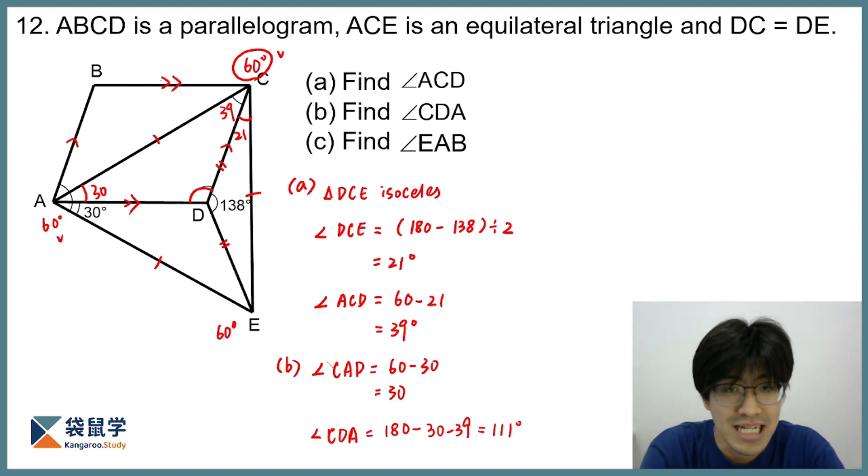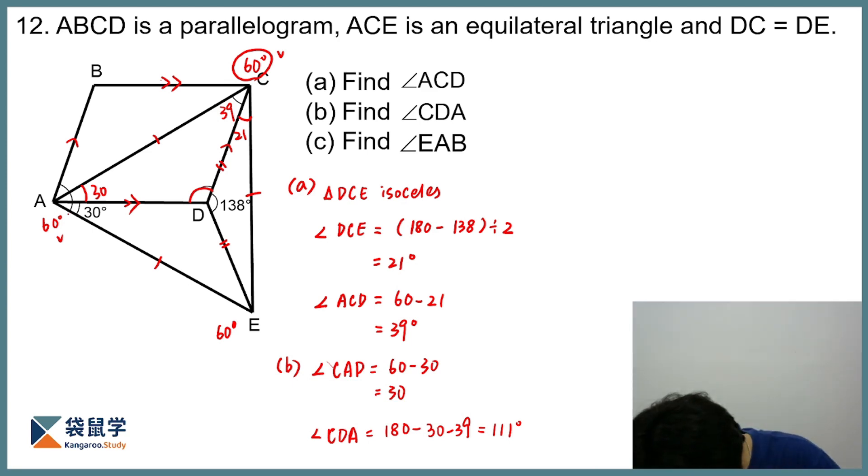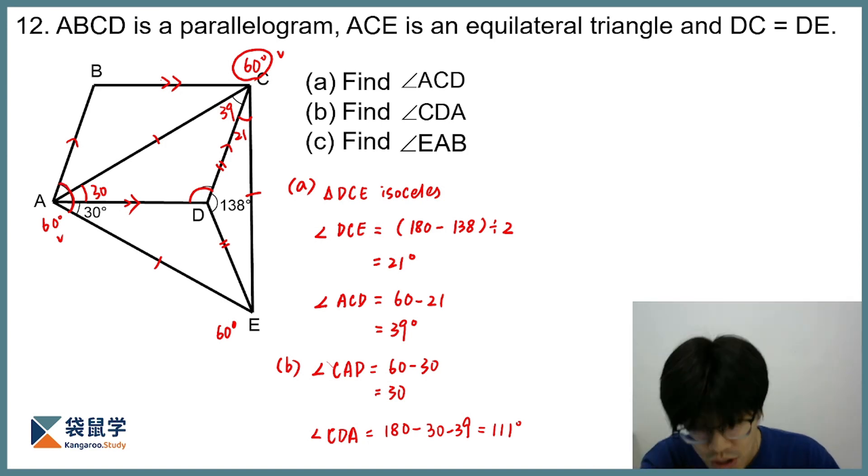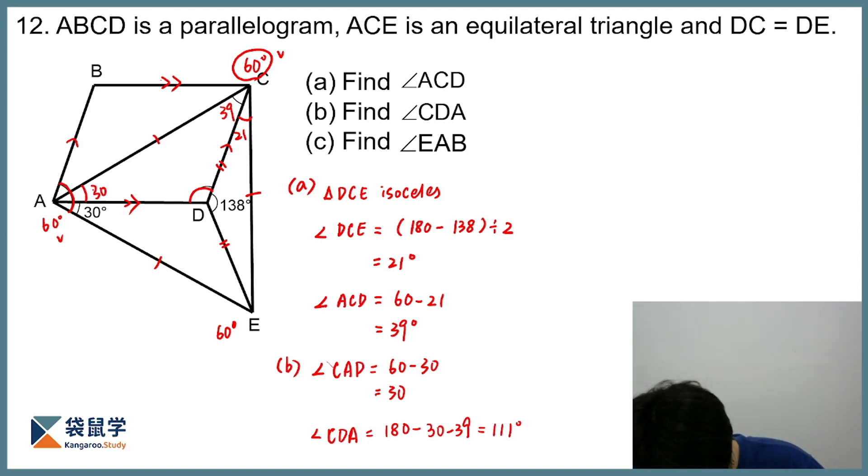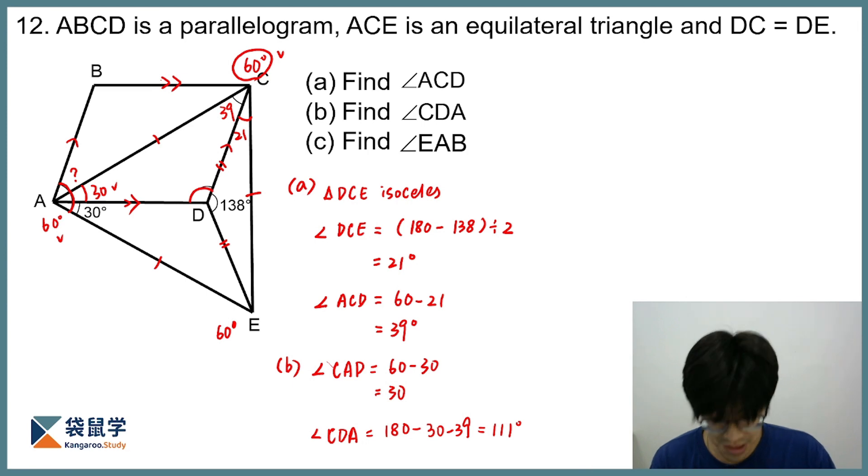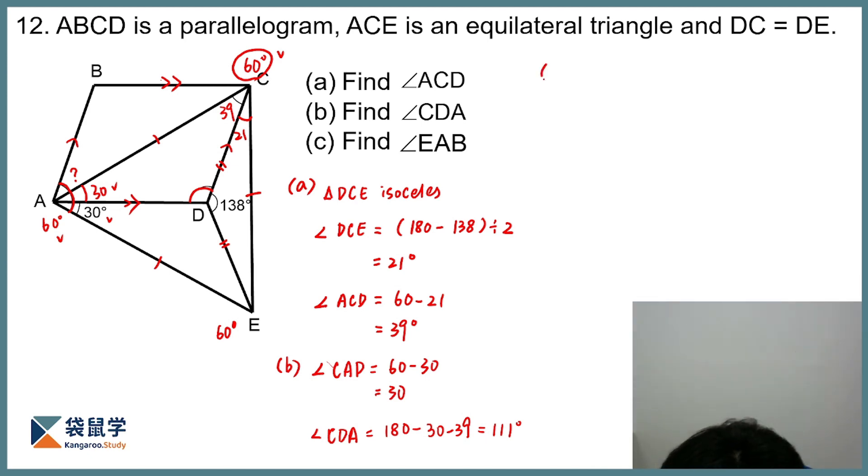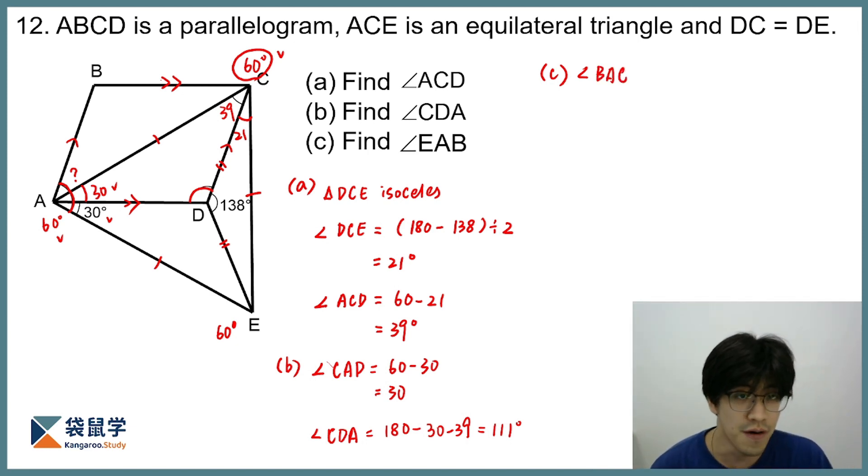Now let's move on to the next part. Now in order to find out the angle EAB, well, where is EAB? EAB is over here. So we can see that EAB actually consists of three parts. The first part that we don't know at this moment, and this part that we already know is 30, and then this part which we also know to be 30. So we just need to figure out the first part, which is what angle? Let me write it down, which is the angle BAC. So if I know BAC, then problem solved. Now, how can I find out BAC?